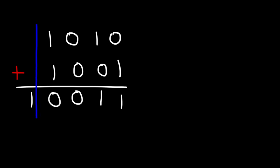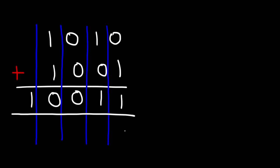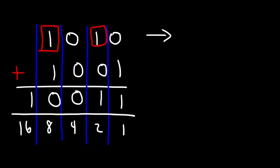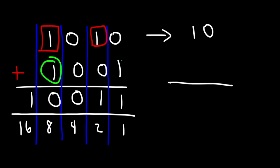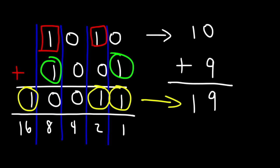So this is 1, 2, 4, 8, and 16. So 1010 is going to have the decimal equivalent of 8 plus 2, because it's in this column — 8 plus 2 is 10. Here we have an 8 and a 1, so 8 plus 1 is 9. 10 plus 9 is 19. So here we have a 16 plus a 2 plus a 1, which adds up to 19. And so we can see that we have the right answer. That's how you can add two binary numbers.